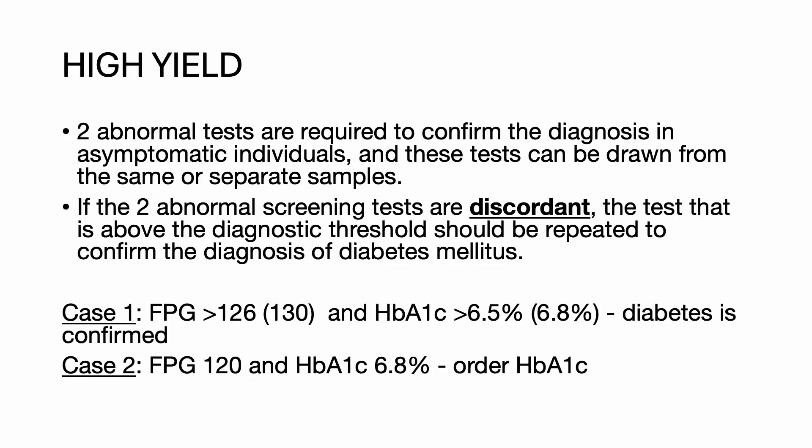Based on those criteria, two abnormal tests are required to confer the diagnosis in asymptomatic patients, and these tests can be drawn from the same or separate samples. If the two abnormal screening tests are discordant, the test that is above the diagnostic threshold should be repeated to confirm the diagnosis. For instance, if the fasting plasma glucose is more than 126 with a hemoglobin A1c of more than 6.5%, then a diagnosis of diabetes is confirmed.